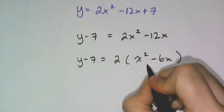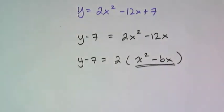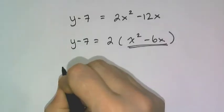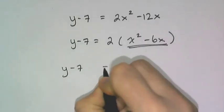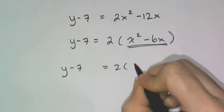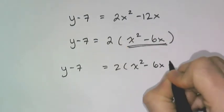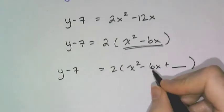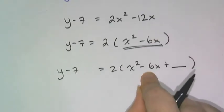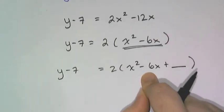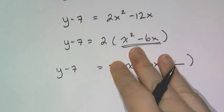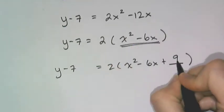Now what I'm going to complete the square for is this x squared minus 6x. And so I have y minus 7 equals 2 times, and then the completed square form of this is x squared minus 6x. And remember I have to add something. And what I add is I take the 6 and I divide it by 2 and get 3 and I square that and I get 9.